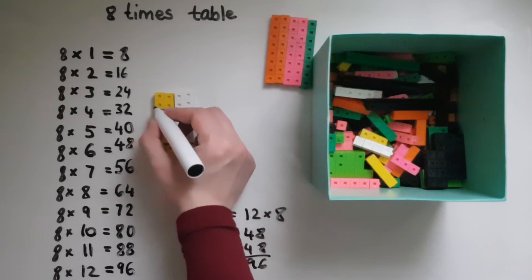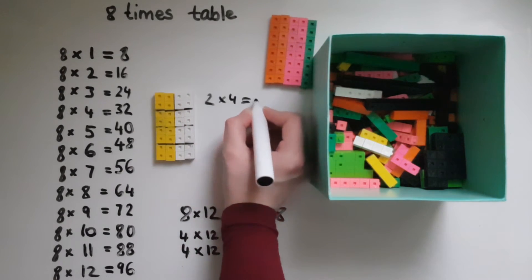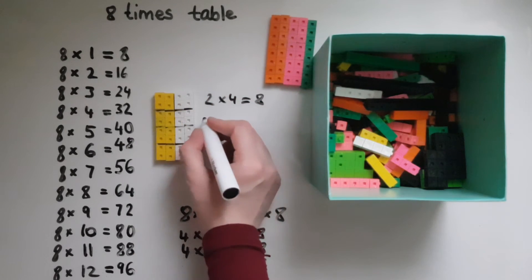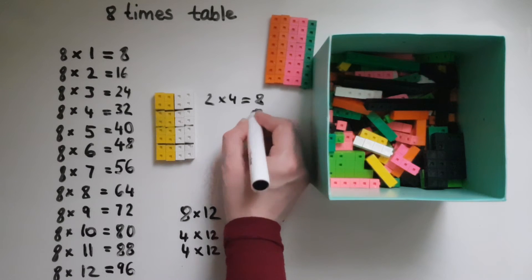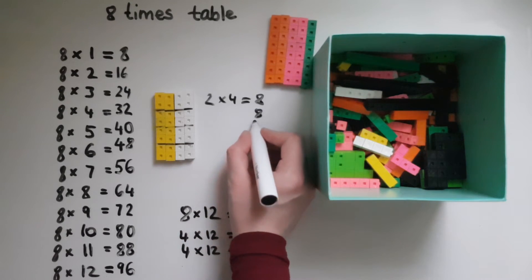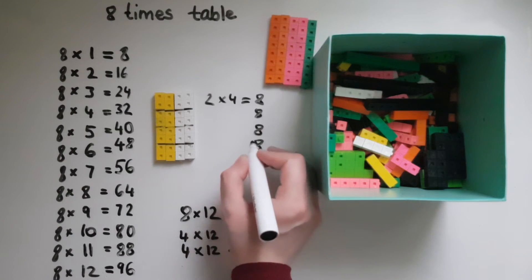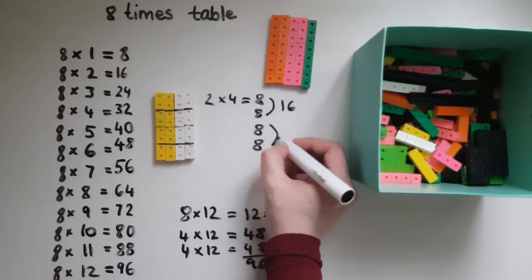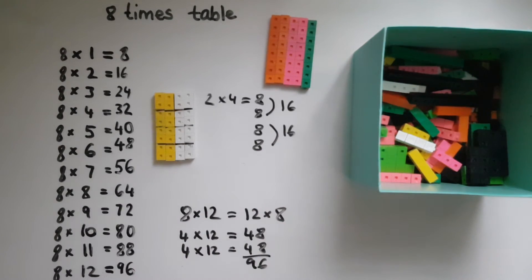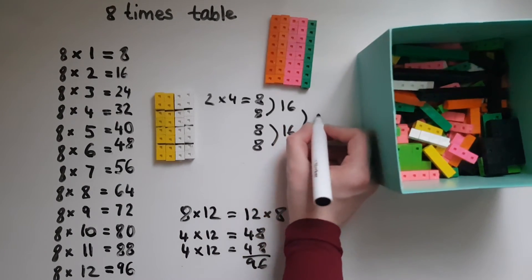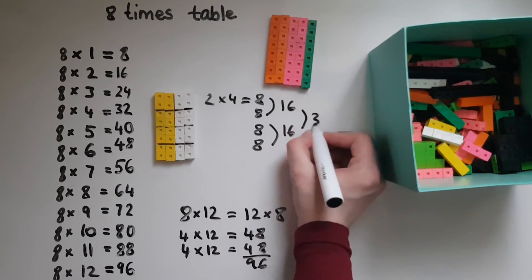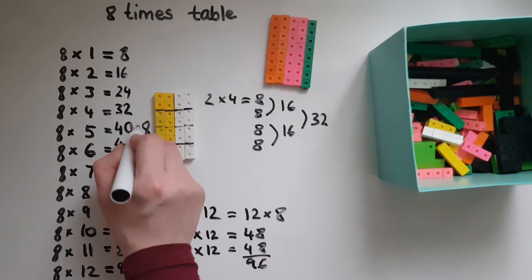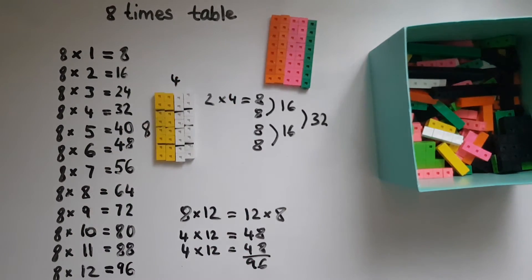So that's 2 times 4, which gives us 8. So there's going to be another 2 rows of 4 which gives us 8, and 8 and 8. These 2 together make 16. So this must make 16 as well, which both of them make 32. So 8 times 4 makes 32.